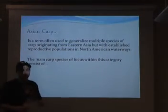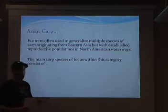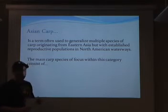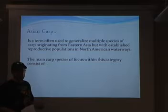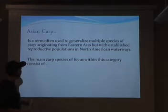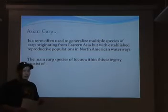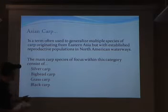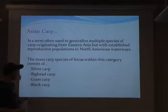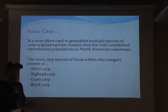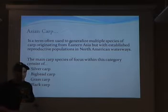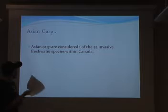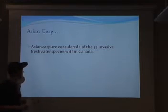Asian carp is a term used to generalize multiple species of carp originating from Eastern Asia, but with established breeding populations within North America. Main carp species of focus include silver carp, bighead carp, grass carp, and black carp, with silver carp and bighead carp being the main species of concern.